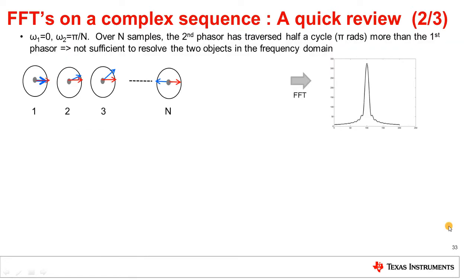How far apart do two frequencies, omega 1 and omega 2, have to be for them to show up as separate peaks in the Fourier transform? Here you have two phasors rotating with slightly different frequencies such that over N samples, the second phasor has traversed half a cycle — pi radians more than the first phasor. So omega 1 is 0 and omega 2 is pi by N. Over N samples, the cumulative angle of omega 2 with respect to omega 1 will be pi radians, or half a cycle. As you can see, that is clearly not sufficient to resolve these two objects in the frequency domain.